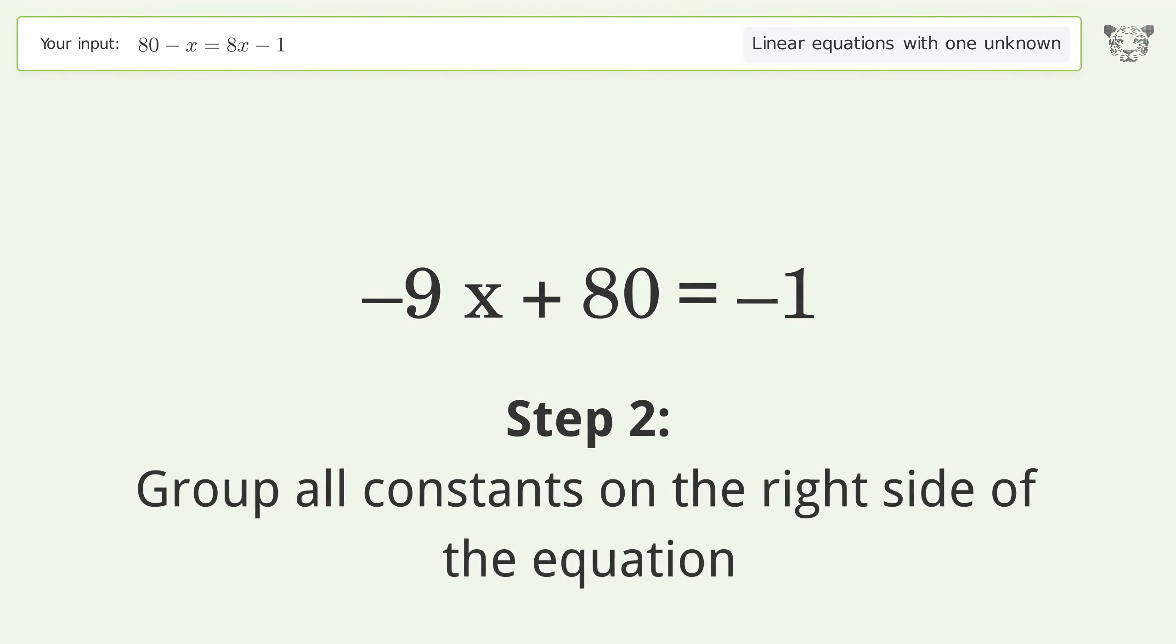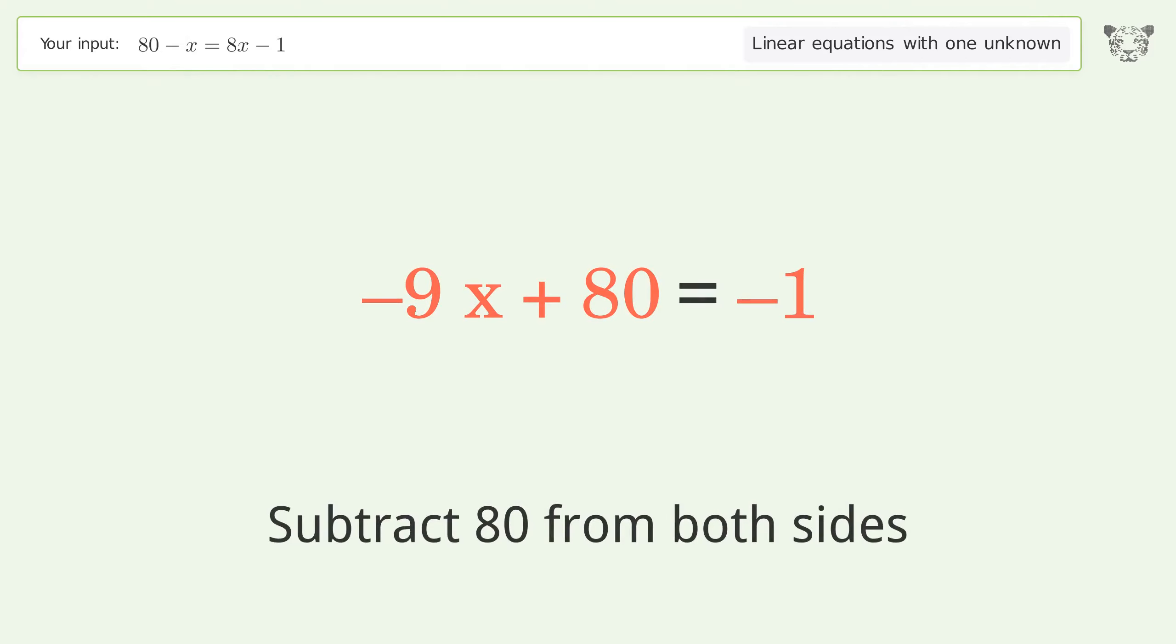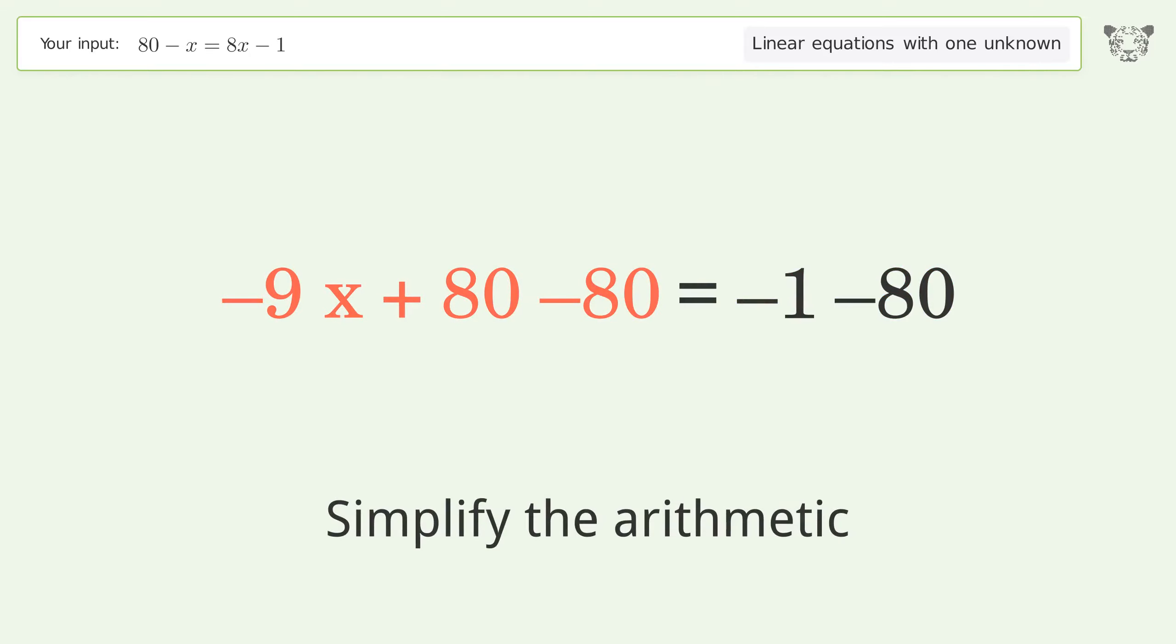Group all constants on the right side of the equation. Subtract 80 from both sides. Simplify the arithmetic.